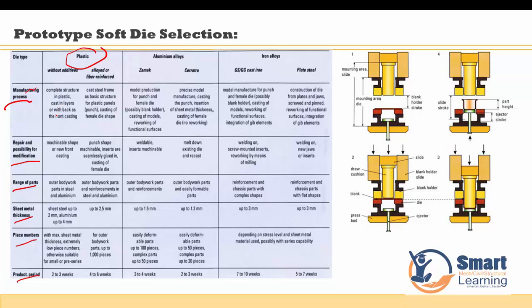Cast in layers or with the back as the front casting, and the repair and possibility for modification is machinable. Inserts are seamlessly glued in casting of the female die. Range of parts includes outer body work parts in sheet and aluminum, reinforcement in sheet and aluminum if you have fibers, and sheet metal up to 2mm and aluminum up to 4mm.